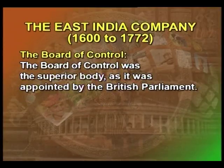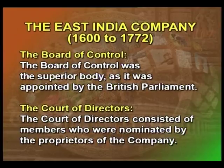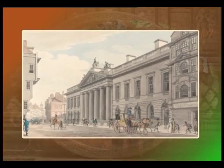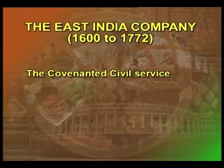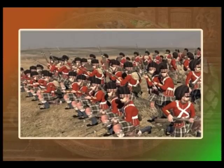The Board of Control was the superior body as it was appointed by the British Parliament, and the Court of Directors consisted of members who were nominated by the proprietors of the company. The most notable contribution of the British — the creation of a body of civil servants — took place during the reign of the company. The civil service under the company was divided into two categories. The Covenanted Civil Service consisted of only Englishmen. It was so called because this category of civil servants entered into a covenant to serve the company faithfully and gave security for doing so.